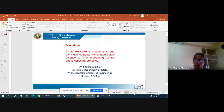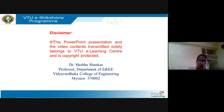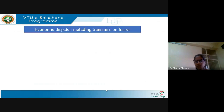In this session we will now see the economic generation scheduling when transmission losses are included in the system. Previously we have seen two cases: in the first case transmission losses along with generator limits were neglected, in the second we considered the limits on the generators, and in the third we are now considering economic dispatch including transmission losses.